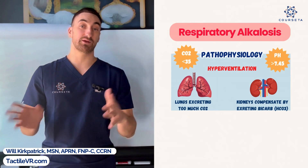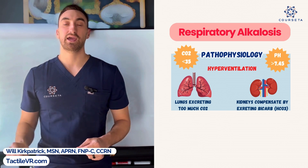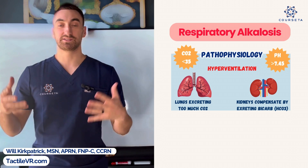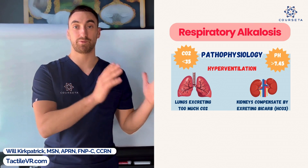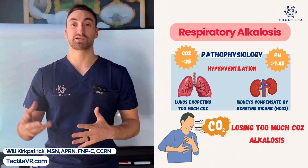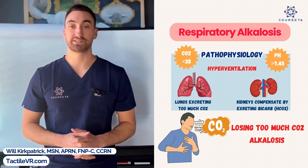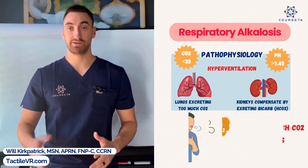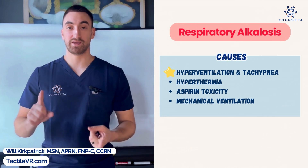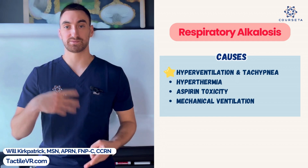Respiratory alkalosis is the opposite of respiratory acidosis — defined by a pH above 7.45 and a CO2 below 35. The CO2 goes in the opposite direction of the pH because it's due to the respiratory system. The cause is hyperventilation: the lungs are excreting so much CO2 that it causes an alkalosis. The kidneys compensate by excreting bicarb. The most common cause is a fast breathing rate above 20 breaths per minute. Other causes include hyperthermia, aspirin toxicity, and mechanical ventilation set too fast.